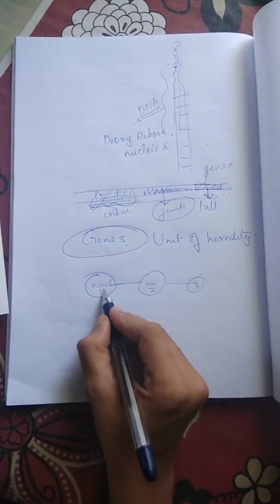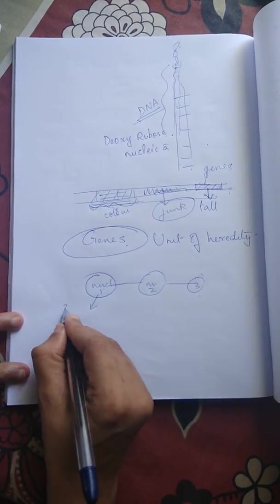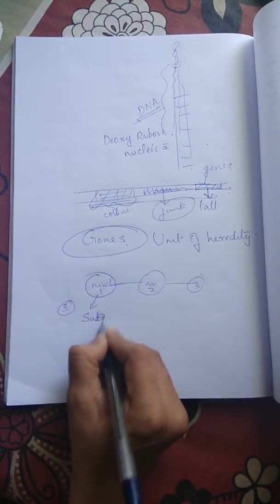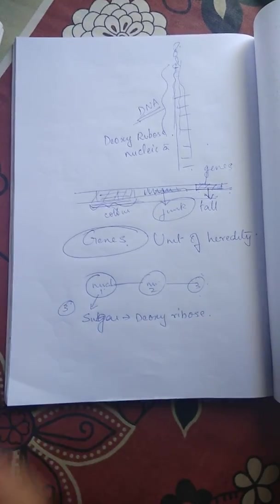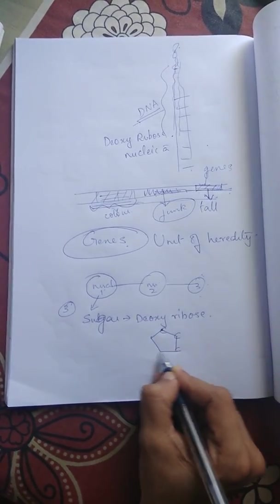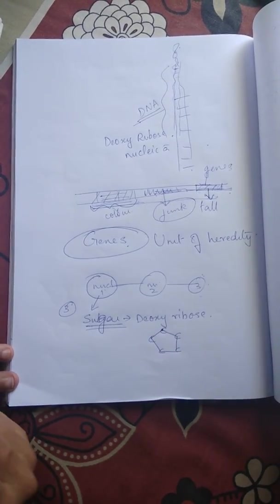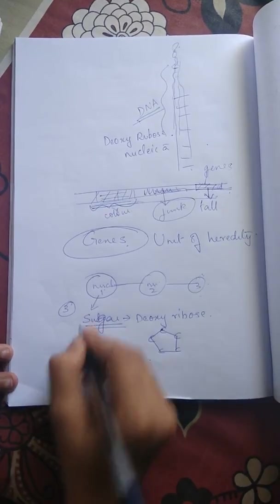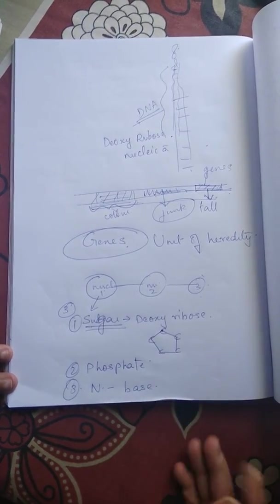A nucleotide consists of a pentose sugar — in DNA that sugar is deoxyribose, which is a pentose sugar with 5 carbons. The second component is a phosphate group. The third component is a nitrogenous base.